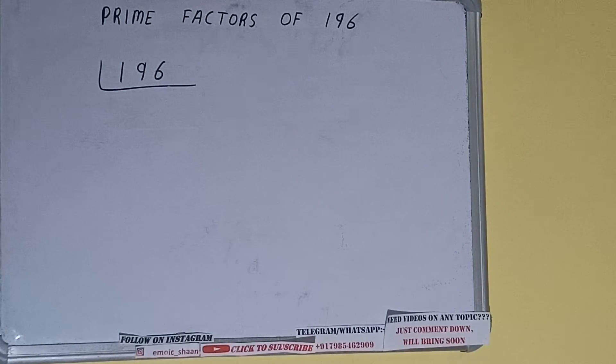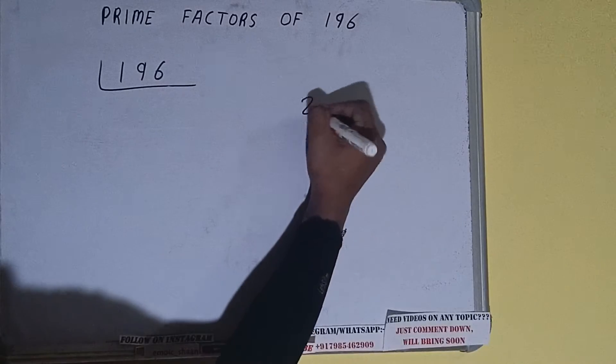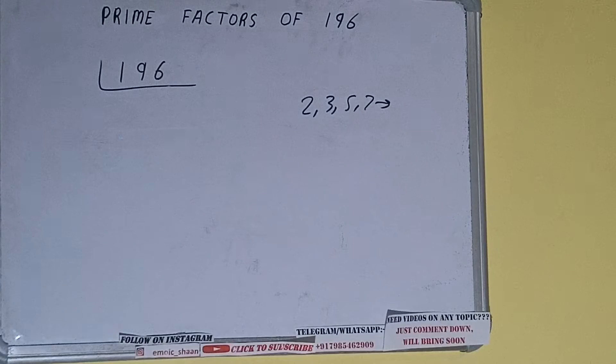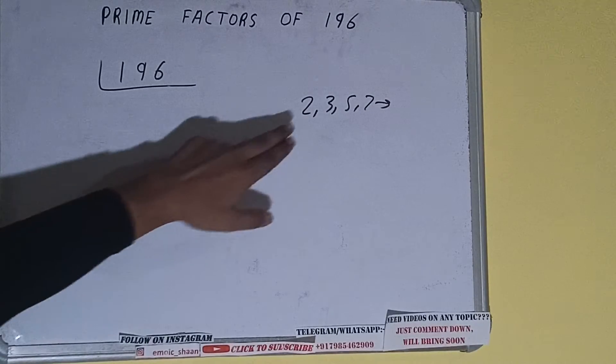...is what are prime numbers. Prime numbers are numbers that are divisible by one and the number itself, like two, three, five, seven, and so on. We'll check with the lowest prime number we have, that is two.